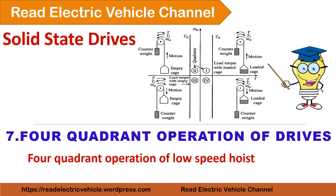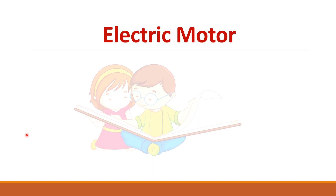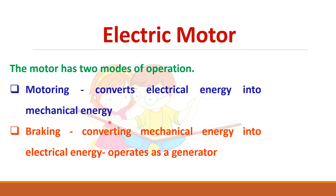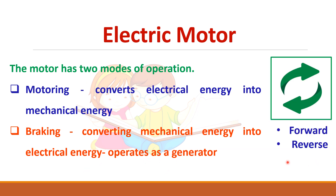In this video we will see about the four quadrant operation of electric drives. In electric drives, electric motors are used and they can be operated in two modes: motoring mode, where electrical energy is converted to mechanical energy, and braking mode, where mechanical energy is converted into electrical energy. In addition, the motor can operate in forward or reverse direction, so both forward and reverse motoring as well as forward and reverse braking are possible.